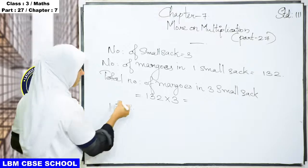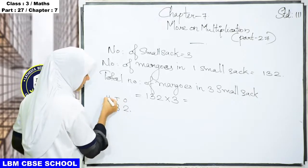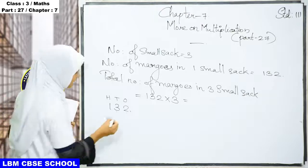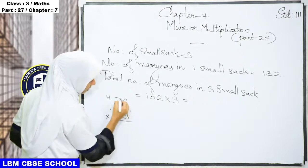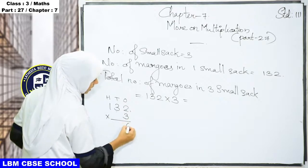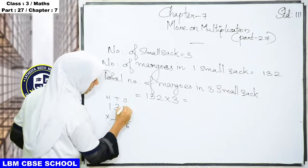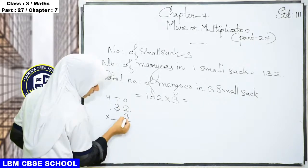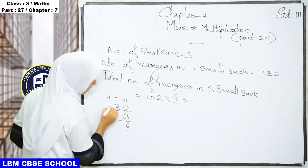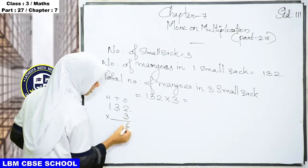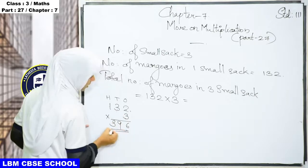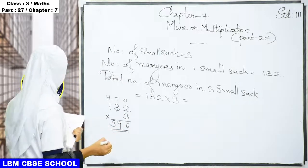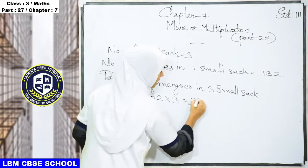Here we have ones, tens, and hundreds places. We multiply each digit by 3: three twos are six — that is the ones place. Three threes are nine — that is the tens place. Three ones are three — that is the hundreds place. So the total number of mangoes in the small sacks is equal to 396.